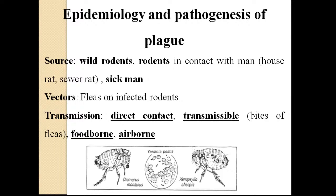The sources of infection for plague are wild rodents in contact with humans — including house rats, silver rats living near homes — and sick humans. Transmission routes include direct contact from sick to healthy persons; transmissible route through bites of fleas; foodborne route when food is contaminated by urine or feces of rodents; and airborne through inhalation. Almost all transmission routes are present except sexual transmission.